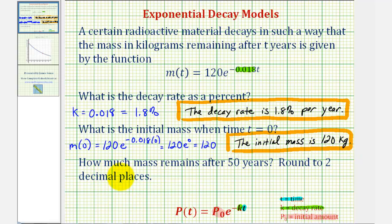And now for the last question, how much mass remains after 50 years, round to two decimal places? Well, they're telling us the time t equals 50 years, so we substitute 50 for t or find the value of m(50).